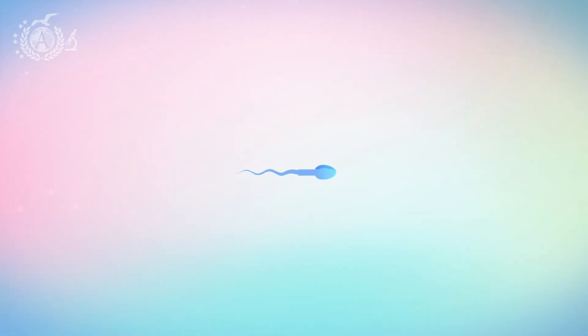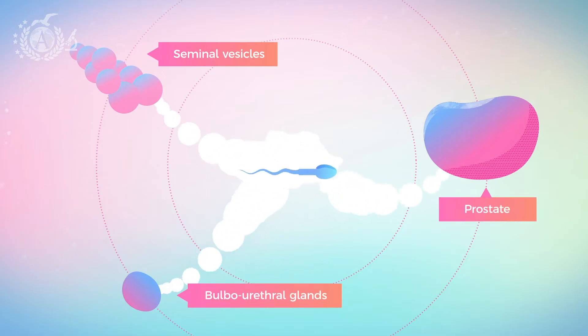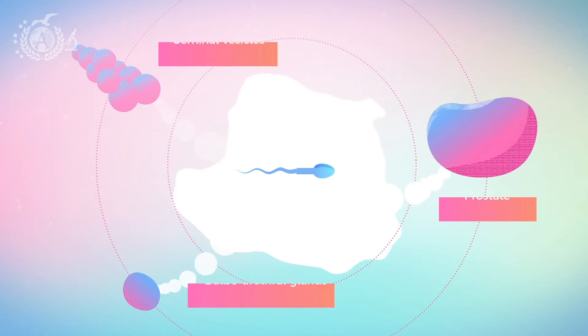However, one important piece for the creation of sperm is still missing. Guess what it is? The seminal fluid. Why is it so important? Well, essentially, because without it, the sperm wouldn't get very far. This fluid is the result of the fusion of the secretions of several exocrine glands, seminal vesicles, prostate, and bulbourethral glands, attached to the ductus complex.